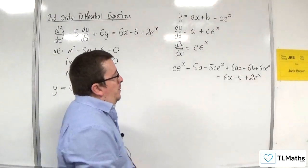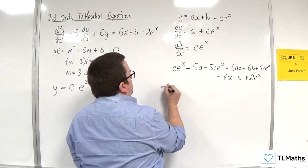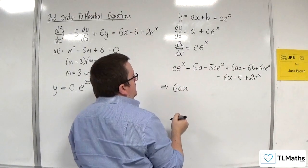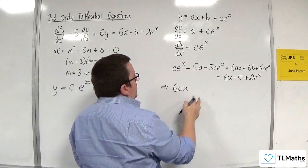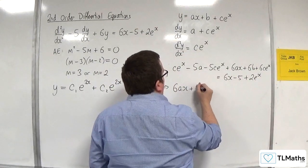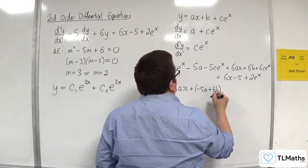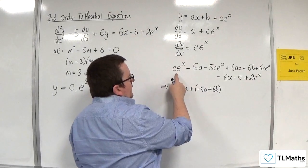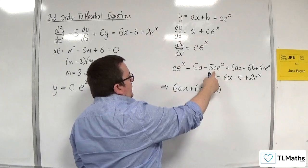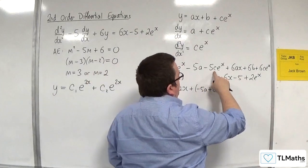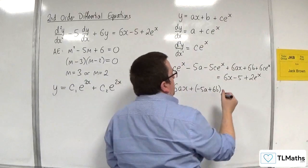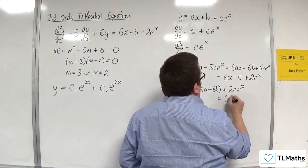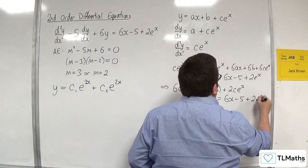Right, let's tidy this up. So the left-hand side, we have 6ax. Then the constant term, we've got minus 5a and 6b, so plus minus 5a plus 6b. And then for the e to the x's, we've got ce to the x take away 5ce to the x, so that's minus 4ce to the x, then plus 6ce to the x, so we'll have plus 2ce to the x. And that's got to be equal to 6x take away 5 plus 2e to the x.